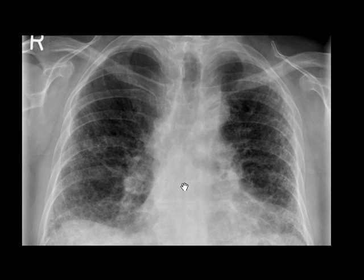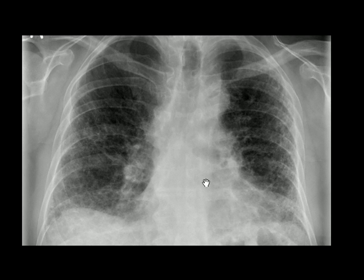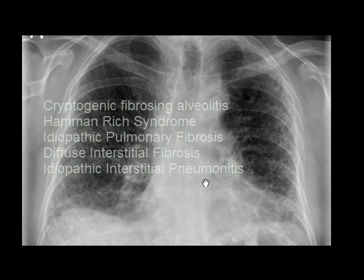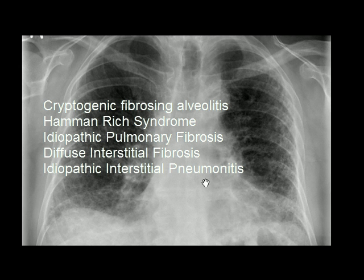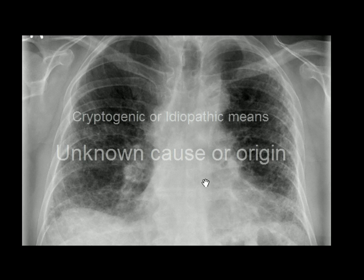Although there can be two dozen conditions that present like this, this patient is suffering from cryptogenic fibrosing alveolitis. Cryptogenic fibrosing alveolitis, Hamman-Rich syndrome, idiopathic pulmonary fibrosis, diffuse interstitial fibrosis, and idiopathic interstitial pneumonitis are all different names for the same condition with unknown cause — cryptogenic and idiopathic both mean of unknown cause or unknown origin.